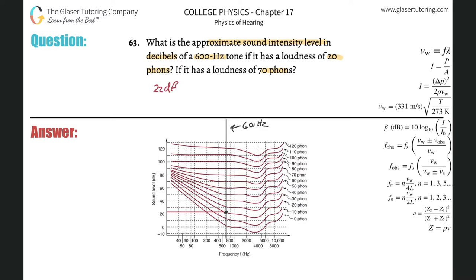And then what happens if it had a loudness of 70 phones? So then you would go to your 70 phone line, find the phone, drag it along, boom there it is. Draw your line on over to the left and it looks like it's about 70. Okay, 70 decibels.